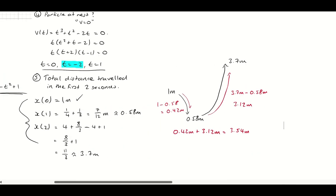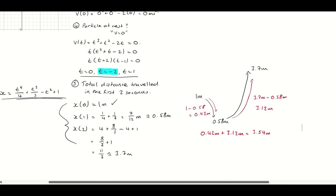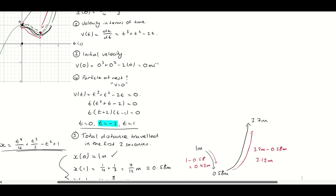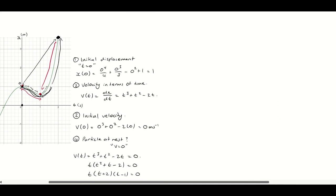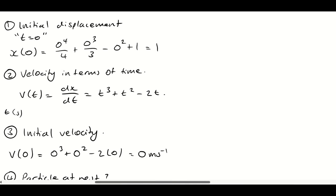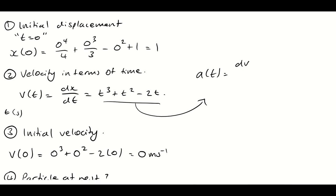The last part is finding the acceleration function. We worked out that velocity was t cubed plus t squared minus 2t. The acceleration is the derivative of velocity, so dv over dt. Differentiating gives us: a = 3t squared plus 2t minus 2.